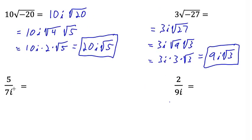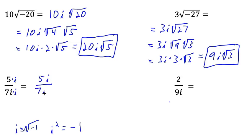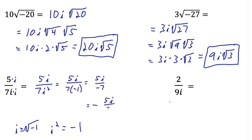Now we won't dwell on this too long right now, but when we have a fraction, we can't leave i in the denominator — it's just one of those things in math that doesn't look right. Luckily there's an easy way to take care of it. Since i equals the square root of negative 1 and i² is defined to equal negative 1, we can multiply the numerator and denominator both by i. That leaves us with 5i over 7i². Since i² equals negative 1, this is 5i over 7 times negative 1, or 5i over negative 7. We put the negative sign up front to get negative 5i over 7.